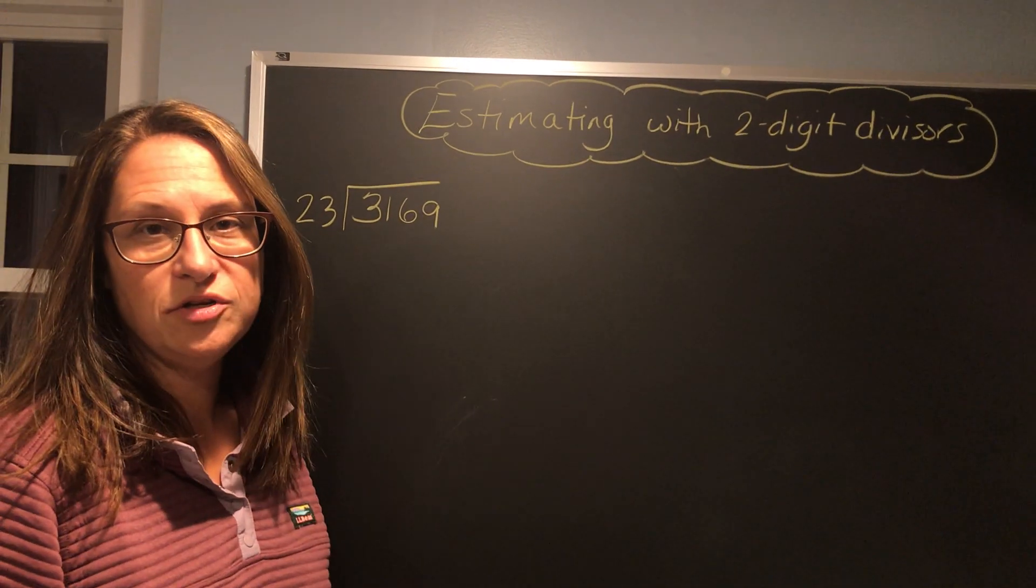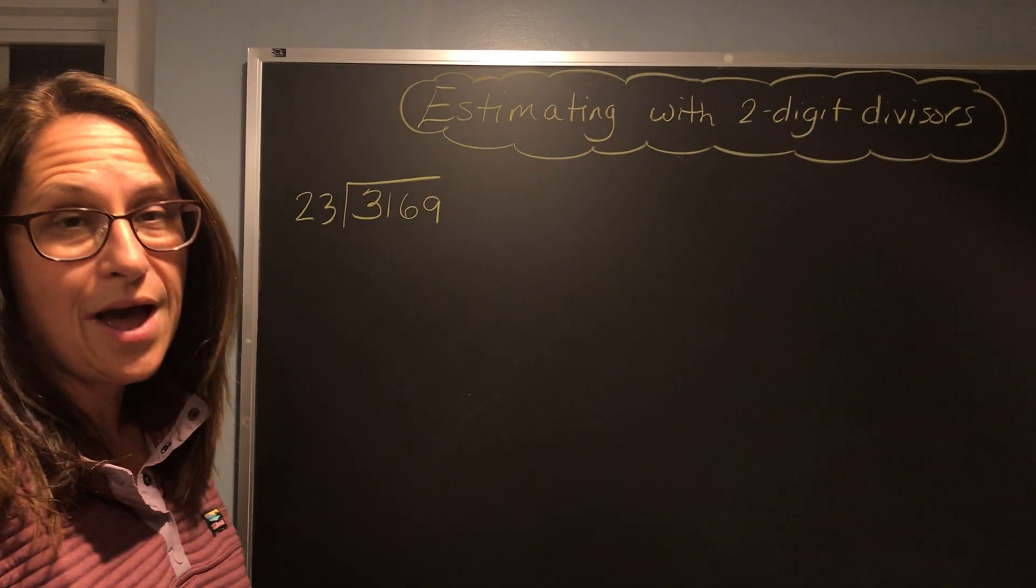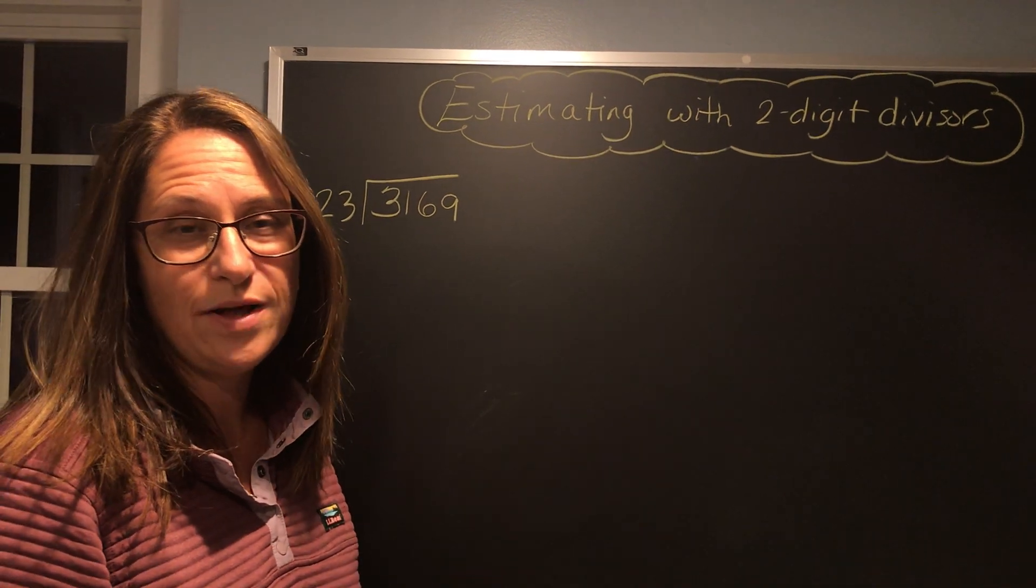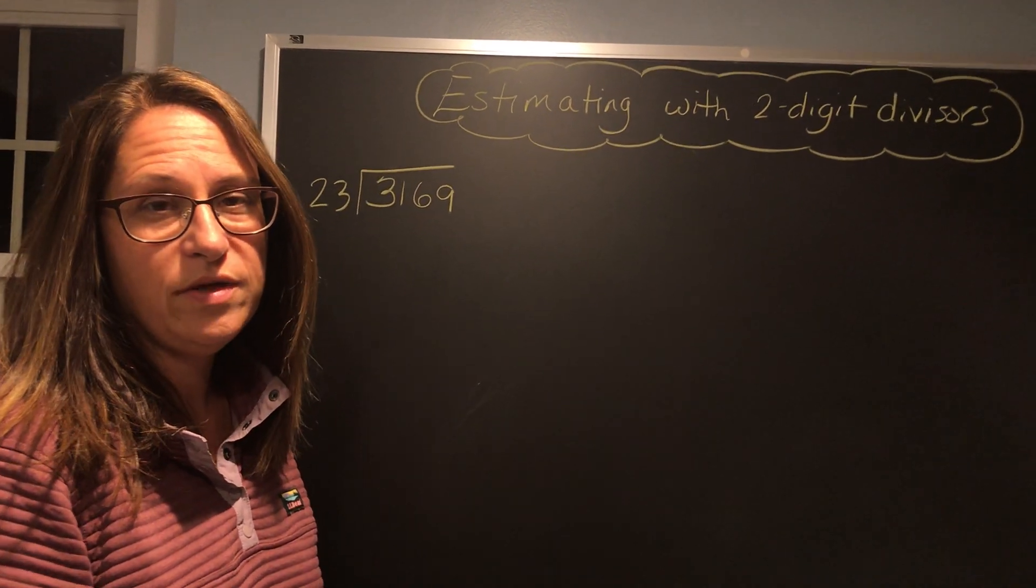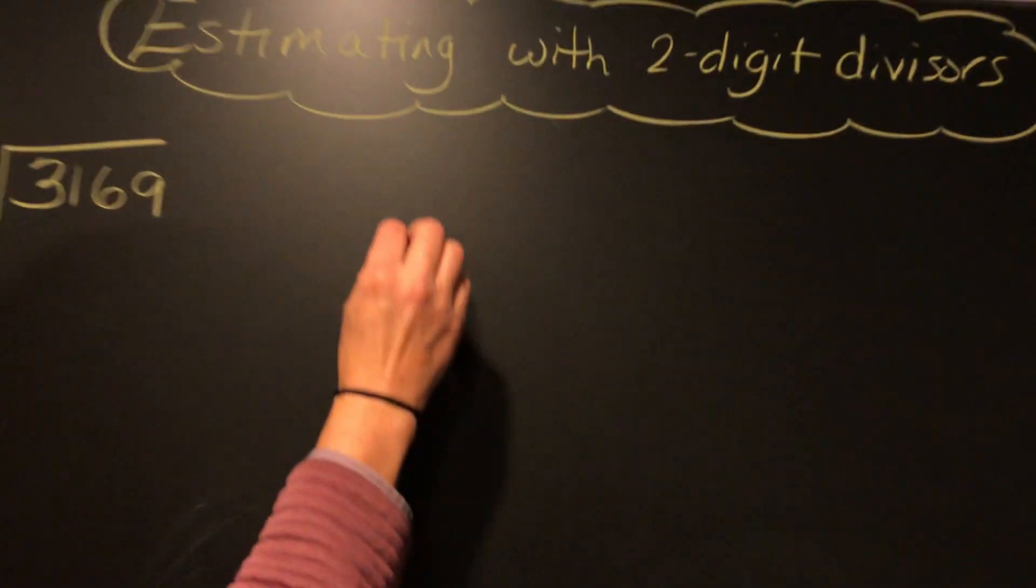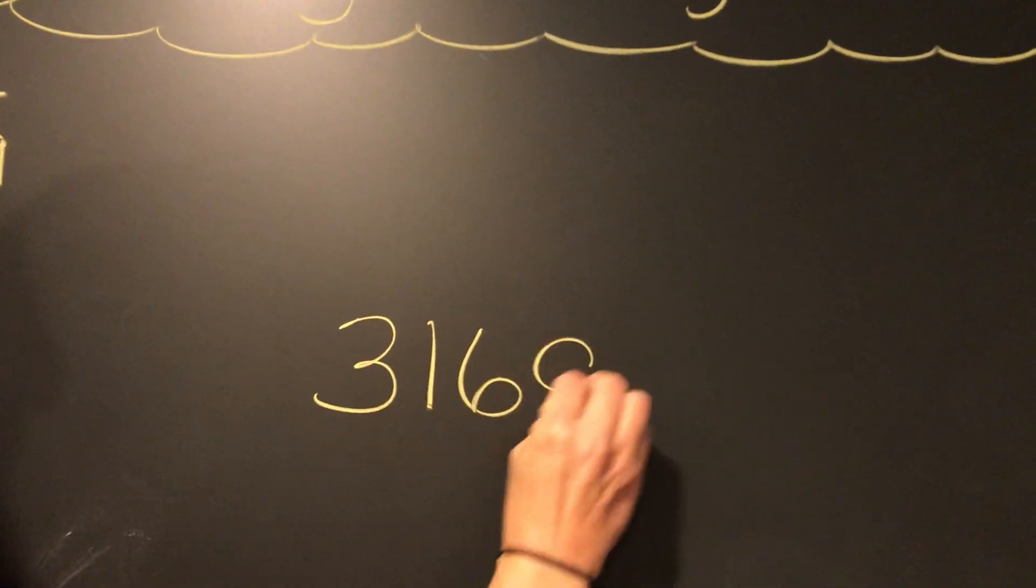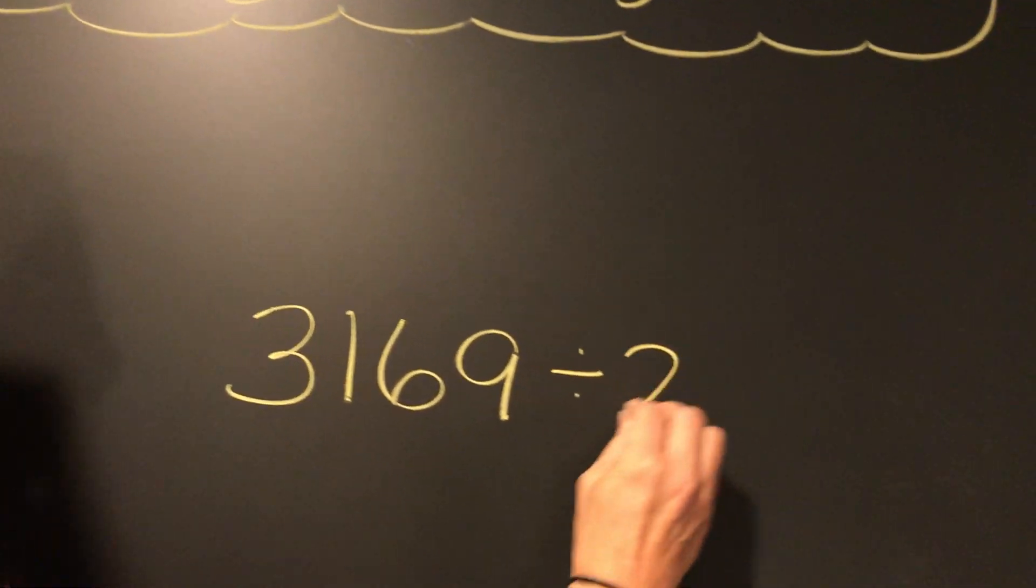I'm also going to show you how to do an overestimate and an underestimate using compatible numbers, or numbers that work well together that you can compute mentally, like you do them in your head. So first step is to write it horizontally: 3,169 divided by 23.